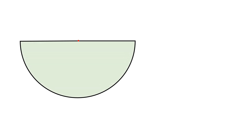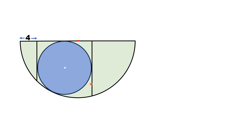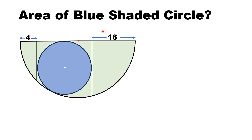Hello everyone. In this video, a semicircle is given in which a circle is inscribed, tangent to both the diameter of the semicircle and the circumference from inside. Two lengths are given: this length is 4 units and this length is 16 units. With this limited data, we have to find the area of the blue shaded circle.